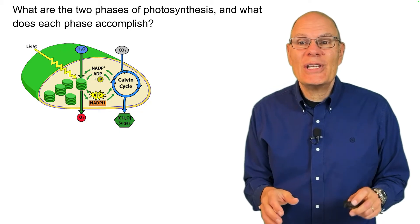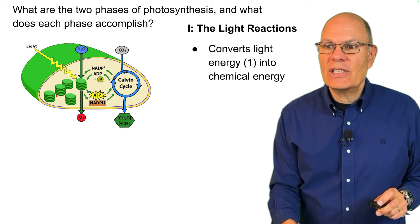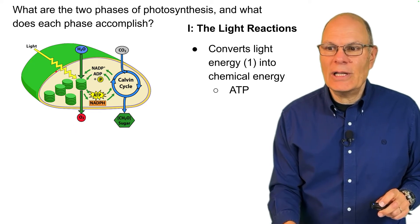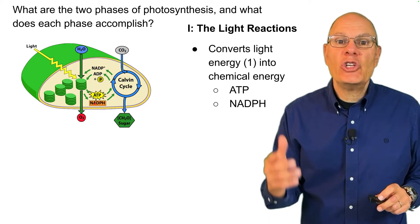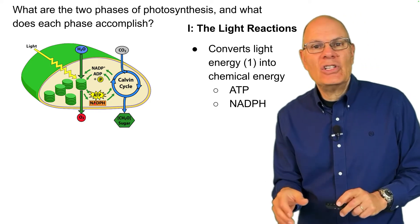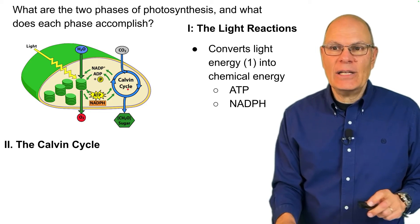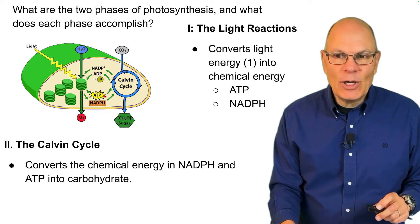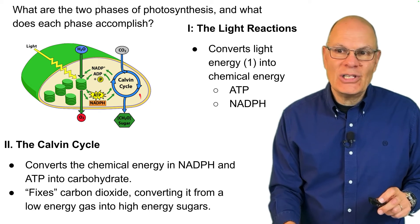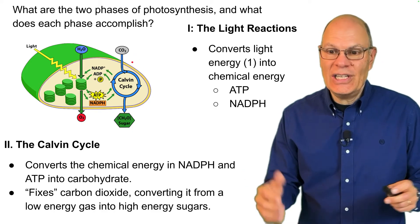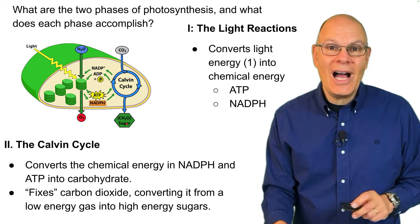The two phases of photosynthesis: we start with the light reactions, which convert light energy into chemical energy in the form of ATP and NADPH. NADPH is like NADH — it's an electron carrier. The second phase, the Calvin cycle, converts the chemical energy stored in NADPH and ATP into carbohydrate. It does this by using carbon dioxide as an input, fixing that low-energy gas into high-energy sugars.